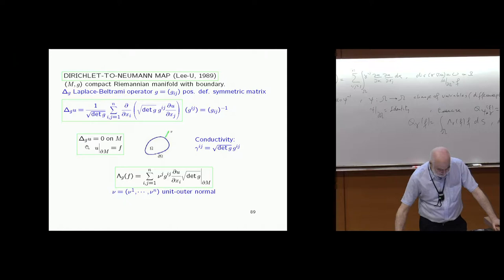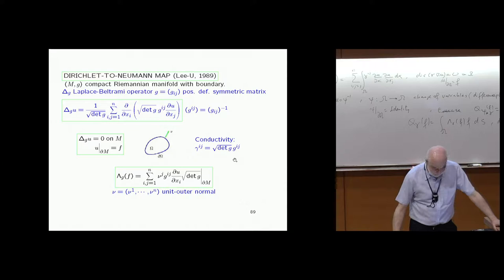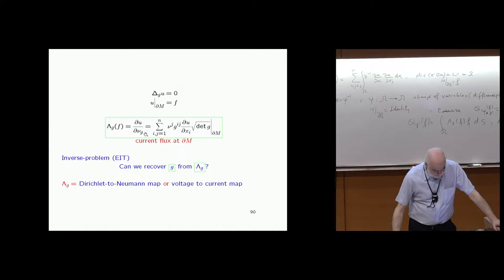The Dirichlet-to-Neumann map in terms of these metrics involves the Laplace-Beltrami operator and harmonic functions. If G is the identity, this is the standard Laplacian. This is called the conormal derivative in geometry — it's the current flux. The problem is geometric: can you recover a Riemannian metric from the Dirichlet-to-Neumann map?